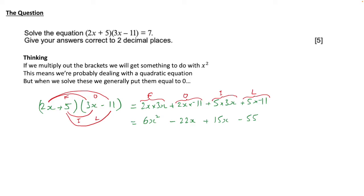We've still got one more bit to do because we've got 2x terms and we want to combine them, so minus 22x plus 15x gives us minus 7x and we've still got our minus 55 there at the end.